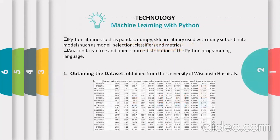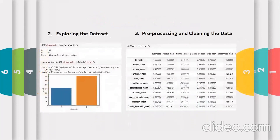The technology being used here is machine learning with Python, so I'll be importing some libraries such as pandas, numpy, sklearn, etc. You can also use Anaconda, which is a free open source tool, but here I'll be going with Google Colab. The first step is obtaining the dataset, which is obtained from the University of Wisconsin. Next I'll be exploring the dataset and cleaning it a little bit.